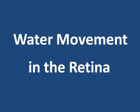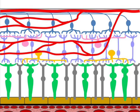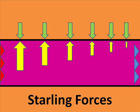Now let's turn more specifically to sites of water movement in the retina. One site of water movement in the retina is the retinal capillaries. At the retinal capillary wall, water is subject to these same starling forces, but in the retina there are some unusual circumstances to consider.